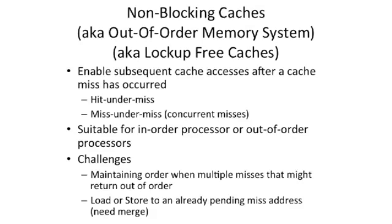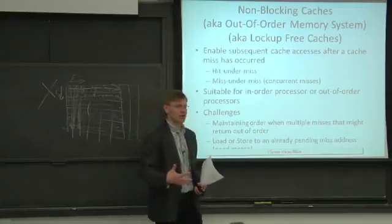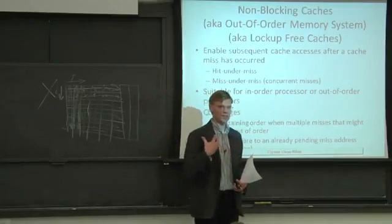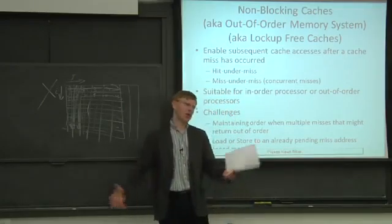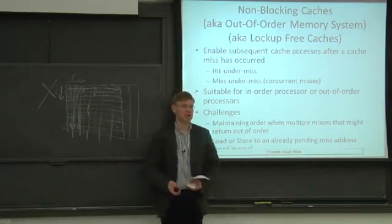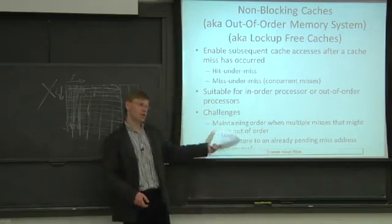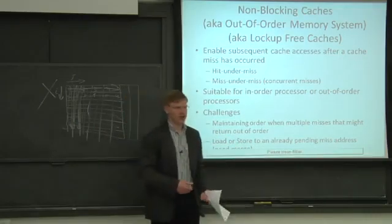What does a non-blocking cache allow you to do? It enables you to have subsequent memory operations occurring from the main processor pipeline even when you have a miss that was earlier in your instruction sequence. All pipelines we've looked at up to this point, even our out-of-order pipelines, basically when you take a cache miss, you just sort of stop the pipe, because we couldn't deal with having memory coming out of order. Now we're going to talk about structures that allow us to track out-of-order memory.